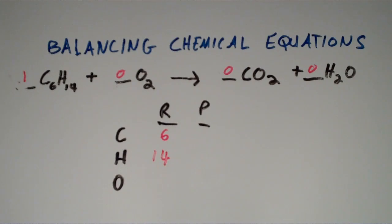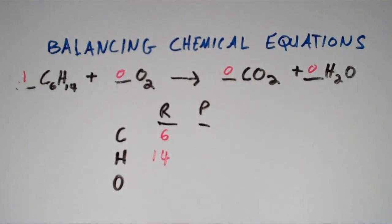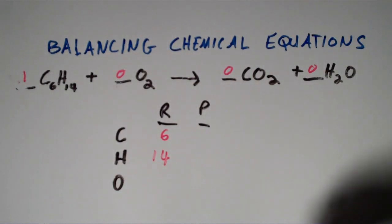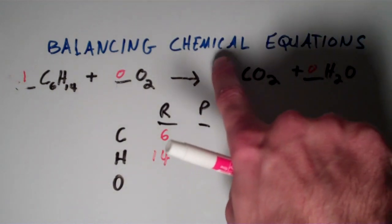So to balance carbon, we're going to make sure that the number of carbons on the right side is the same as the number of carbons on the left side, and the only way to do that is by assigning a coefficient of six on the CO2 molecule.